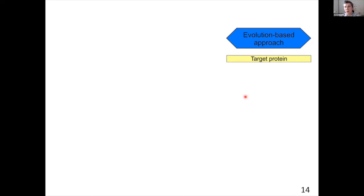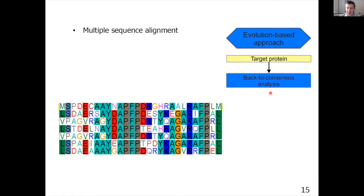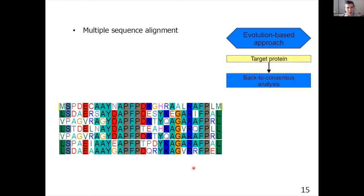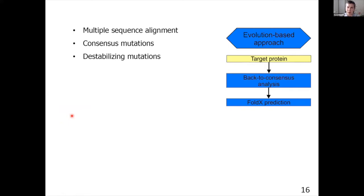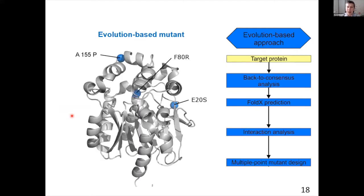Energy-based force field approaches sometimes fail to predict certain mutations, so it's useful to add evolution-based techniques. The second strategy uses back-to-consensus analysis: we construct a multiple sequence alignment and find positions not conserved in your sequence, then mutate them to the most conserved residue at that position. This provides a pool of mutations which then goes through filtering steps including calculating destabilizing mutations with FoldX and checking important interactions.